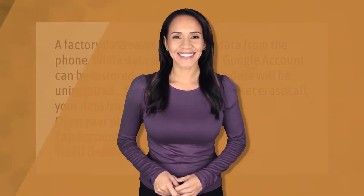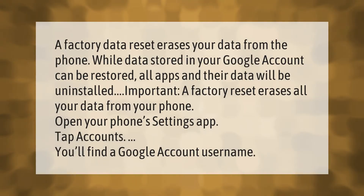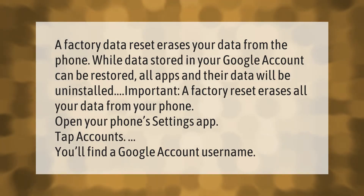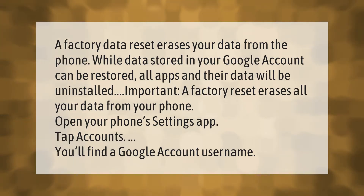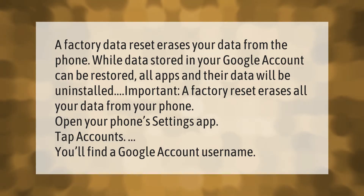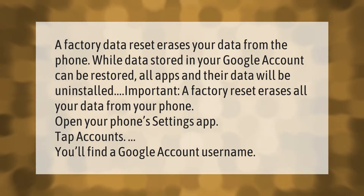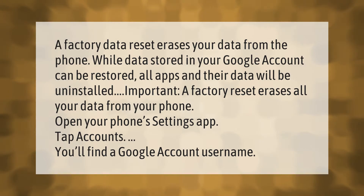A factory data reset erases your data from the phone, while data stored in your Google account can be restored. All apps and their data will be uninstalled. Important: a factory reset erases all your data from your phone. Open your phone's Settings app, tap Accounts, and you'll find a Google account username.